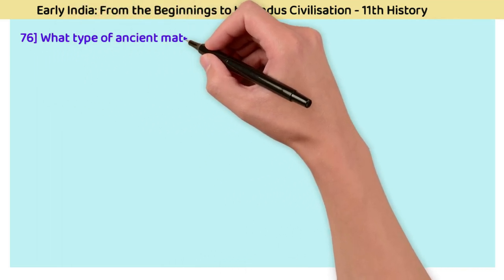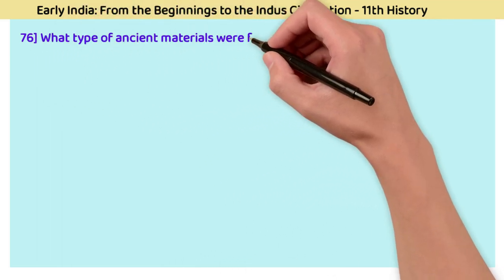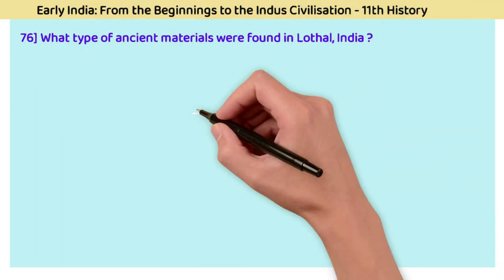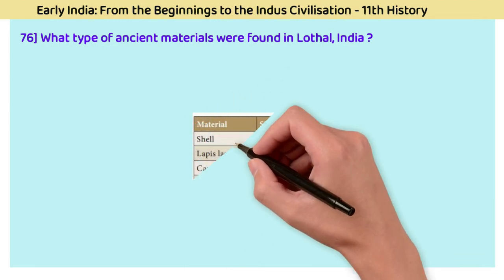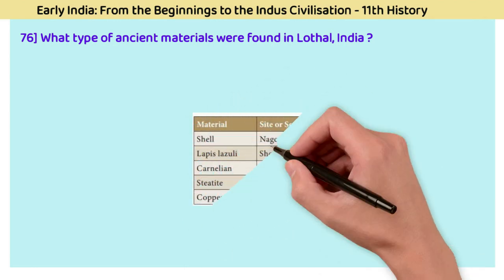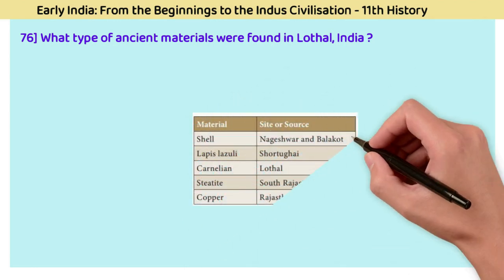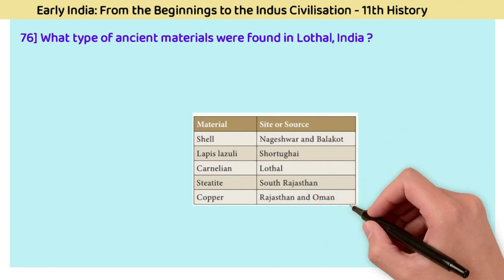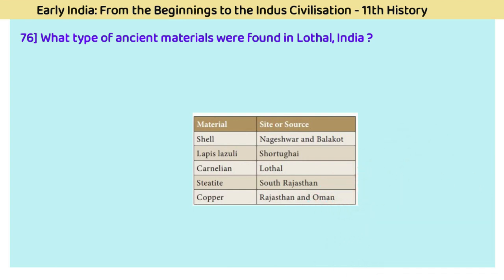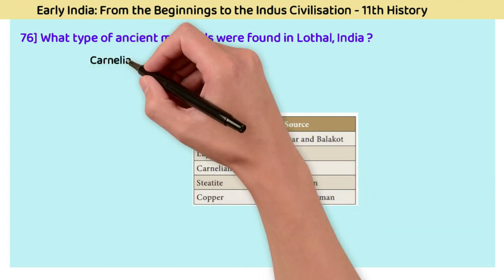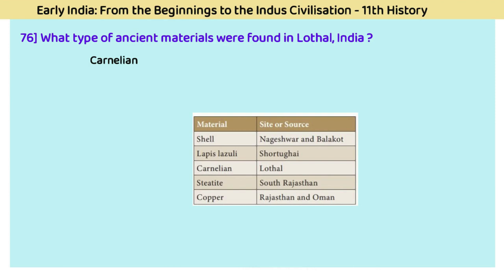Question 76: What type of ancient materials were found in Lothal, India? The answer is carnelian. A table shows the materials and the sites where they were found.